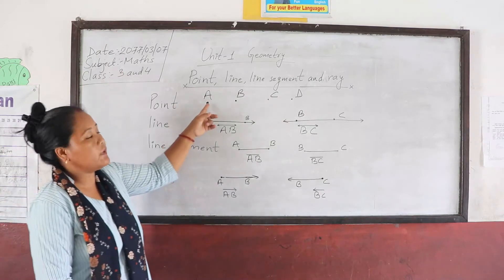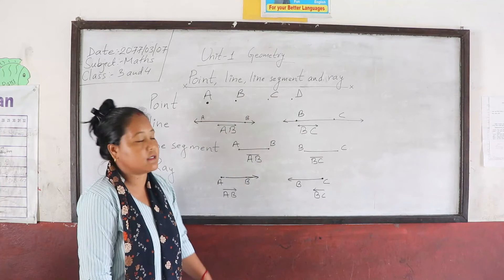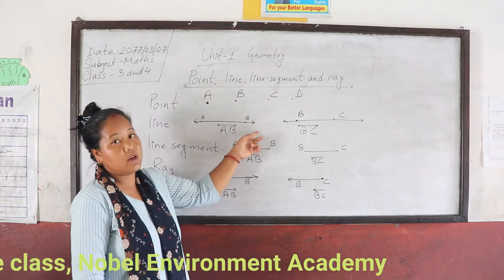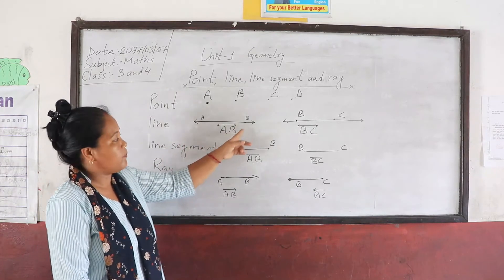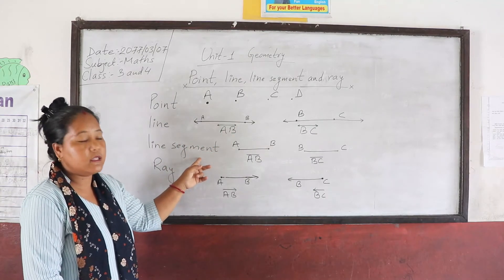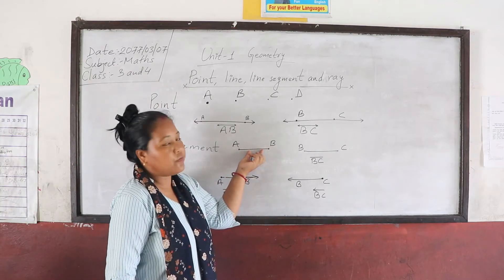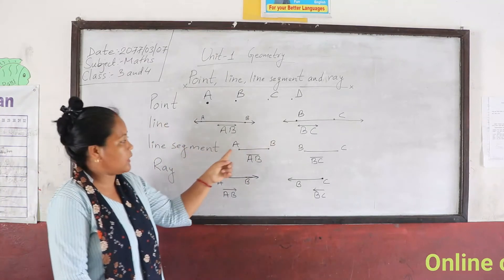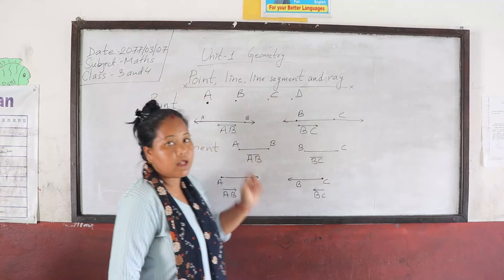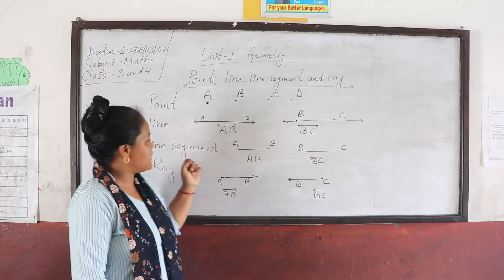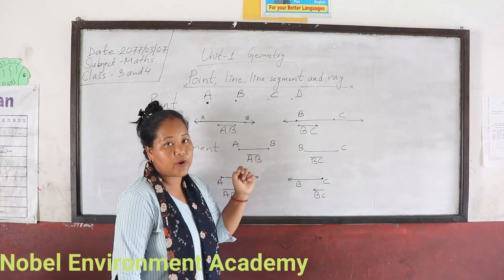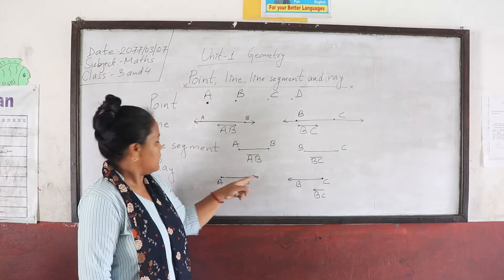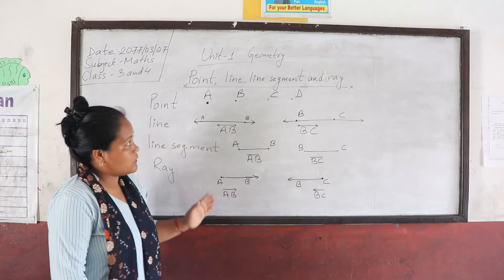Let's review: a point means a dot, represented by capital letters. A line has no endpoints — on both sides we can extend it. A line segment is a part of a line which has a fixed length; A,B and B,C are line segments with endpoints on both sides. In a ray we have only one endpoint, and one side the ray can extend.